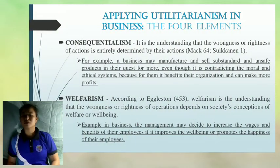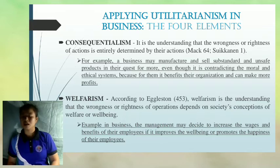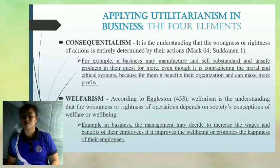Next is applying Utilitarianism in Business — the Four Elements. The theory of Utilitarianism can be applied in business in many ways. Business persons who wish to use this theory must first understand its four elements. However, application of this theory can either be positive or negative. The first element is consequentialism. It is the understanding that the wrongness or rightness of actions is entirely determined by their consequences. Businesses can apply the concept of consequentialism in their operations, even though it may contradict the moral and ethical systems that are in place.